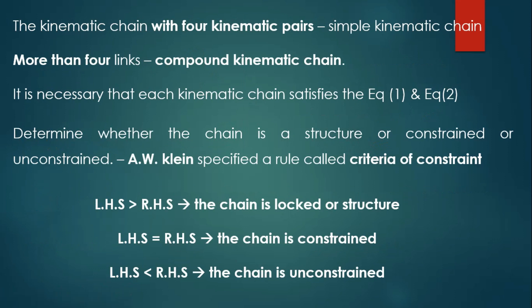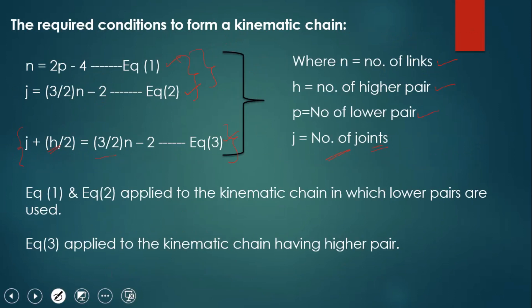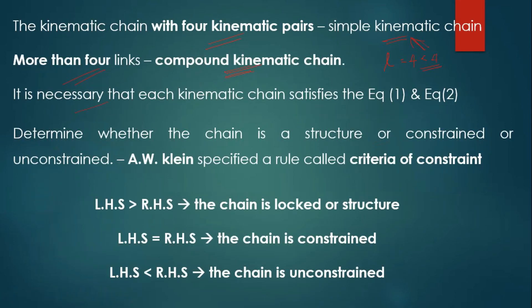Generally, a kinematic chain with four links is called a four-bar mechanism. Four links or fewer is called a simple kinematic chain, whereas more than four links is called a compound kinematic chain. It is necessary that each kinematic chain satisfies Equation 1 and Equation 2.